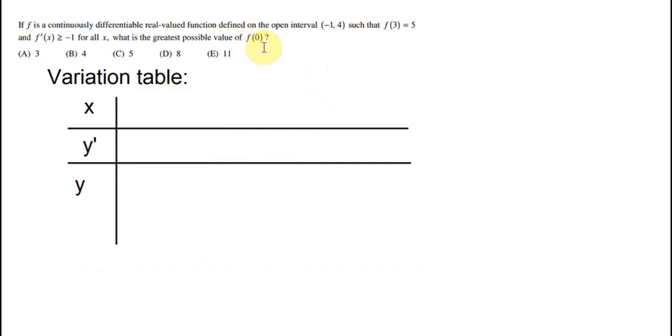Now we consider the numbers 0 and 3. We know that 0 is before 3. To get the greatest possible value, we need to find f(0).